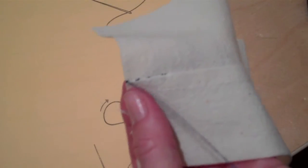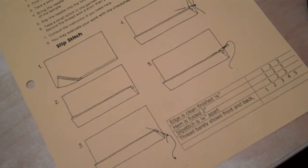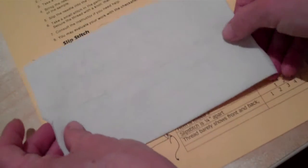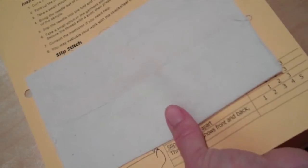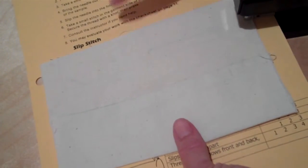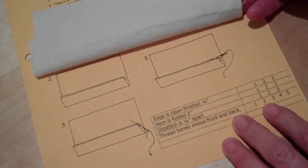When you're done, take your sample for your slip stitch and staple it right here. Make the hem hanging down. Staple it at the top up here so that when I'm looking at them I can look and see how you did on the top and on the bottom.